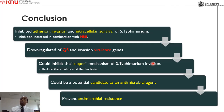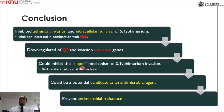In conclusion, methyl gallate inhibited adhesion, invasion, and intracellular survival of Salmonella Typhimurium, and the inhibition was enhanced in combination with 7×MIC of marbofloxacin. Methyl gallate down-regulated quorum sensing and invasion virulence genes, which are especially significant in the zipper mechanism of invasion. Based on these findings, methyl gallate can be considered a potential candidate as an antimicrobial agent or used in combination with other drugs and is important in preventing antimicrobial resistance.